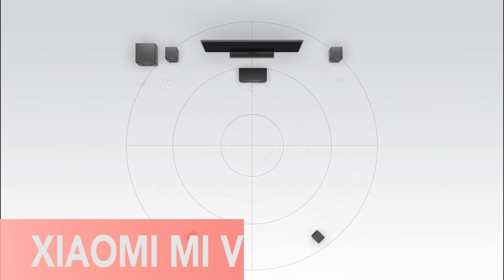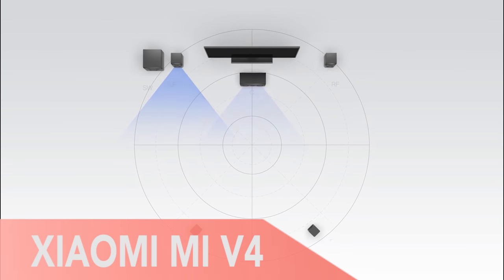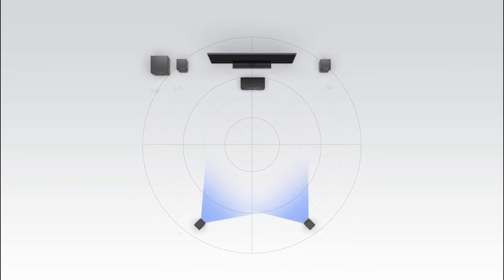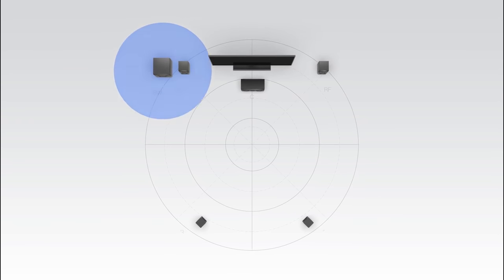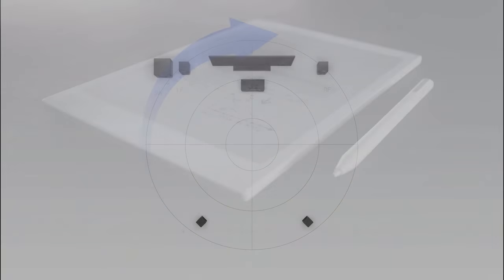First, the Xiaomi Mi V4 Ultra-Thin TV has a 65-inch screen while only being 0.196 inches or 4.98 millimeters at its thinnest.